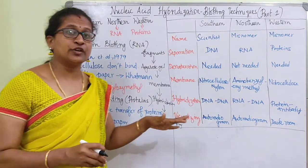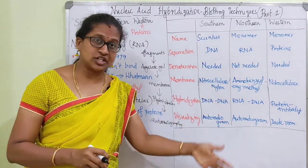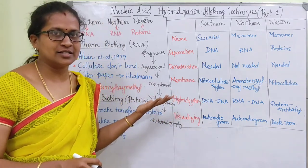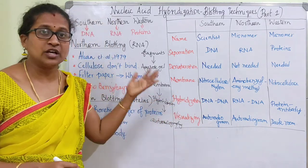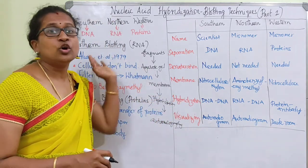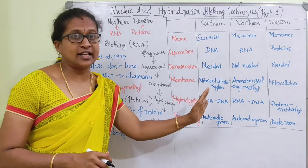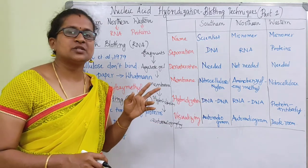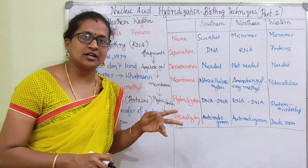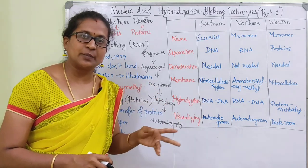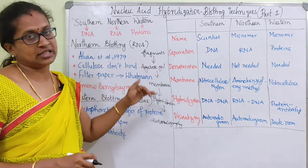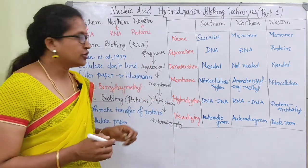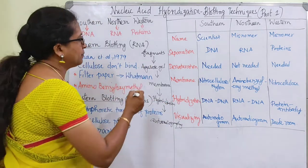For DNA we are going to do denaturation, but RNA is not going to do it - they are generally single-stranded. So there is no denaturation process here. Directly, we will cut the RNA fragments and run them in the agarose gel.